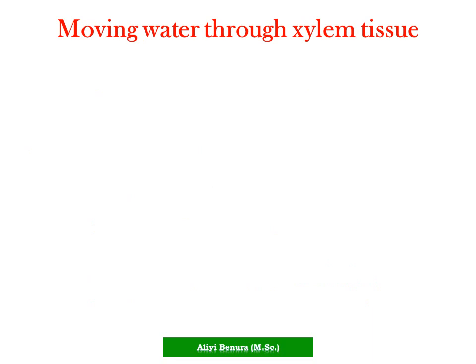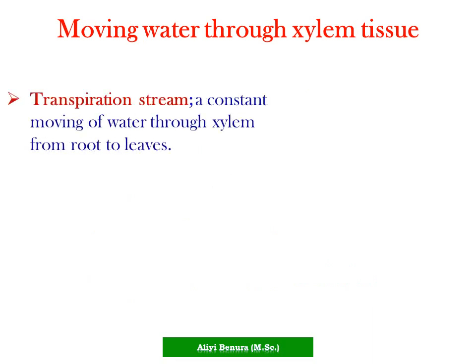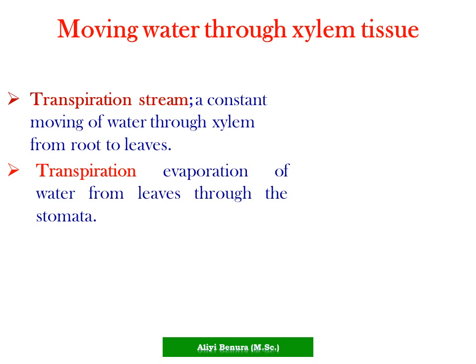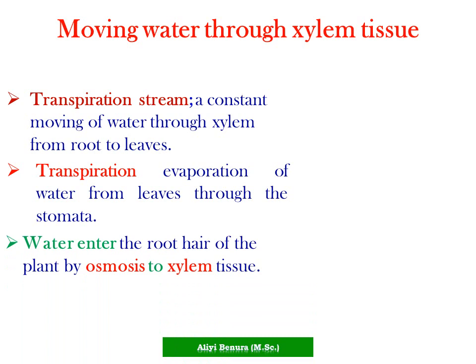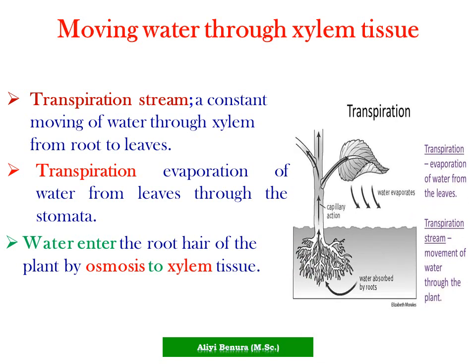Moving water through the xylem tissue is called the transpiration stream — a constant movement of water through xylem from roots to leaves. Transpiration is the evaporation of water from the leaves through the stomata. Water enters the roots of the plant by osmosis into xylem tissue. The transpiration stream is the movement of water through the plant.